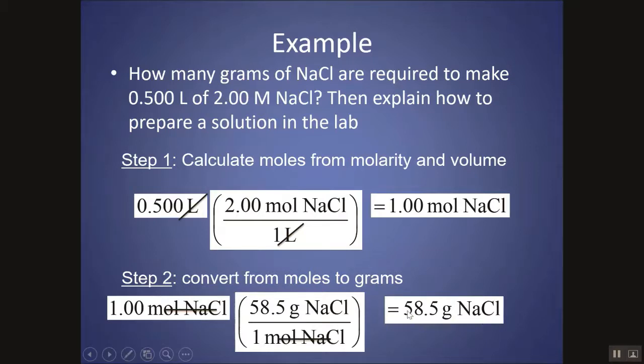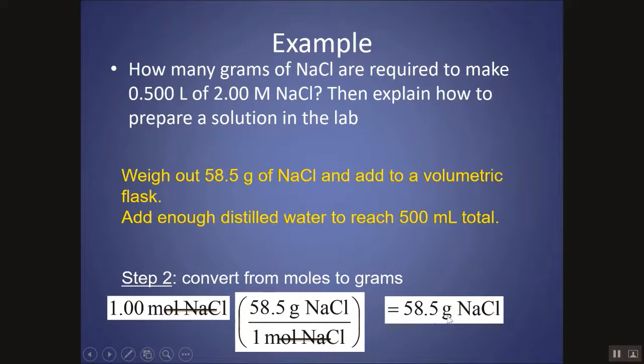So how can I make this? Okay, I'll weigh out the 58.5 grams of NaCl, and then I'll add that to a volumetric flask, and then I'll just add enough distilled water until I get to 500 milliliters total, because that's what I would need in this situation. Really simple.